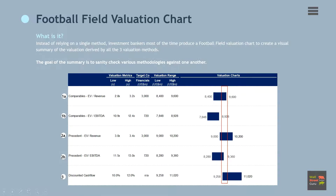Along with the valuation methods, the valuation multiple assumptions have also been included. For example, in the trading comparables method, the EV to revenue multiples range from 2.8x to 3.2x. The discounted cash flows method estimates a weighted average cost of capital, or WACC, of between 10% to 12%.